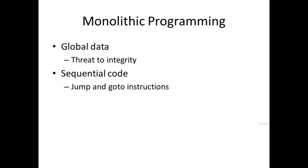The second property monolithic programming supports is sequential code. In monolithic programming there are no sub-programs, sub-routines, or functions. A program has to be written and executed line by line from top to the bottom. To support iterations or looping, it uses jump and go-to instructions. Jump and go-to instructions are not good programming practice — they make the program difficult to debug as well as difficult to maintain.